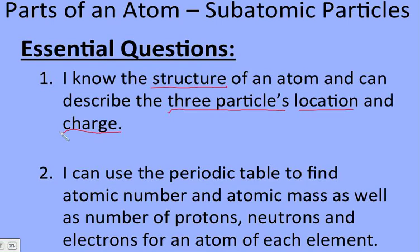Our second essential question is using the periodic table — knowing the different parts within a periodic table square, specifically the atomic number and the atomic mass, as well as how to use those numbers to figure out how many protons, neutrons, and electrons can be found within an atom for any given element.